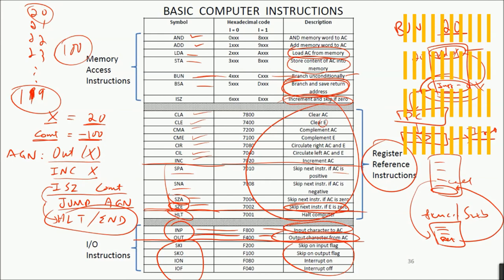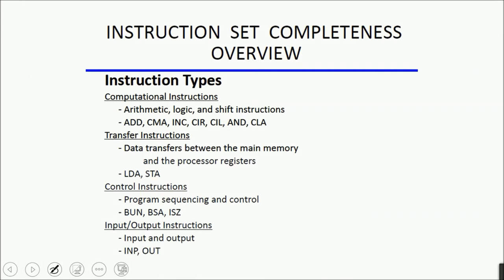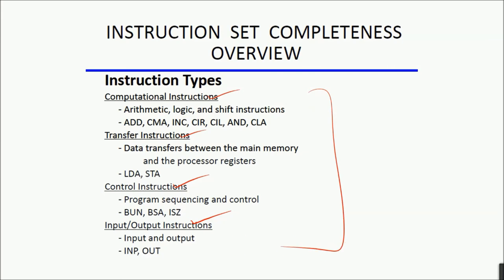This is our complete instruction set of 25 instructions for our basic computer. Hexadecimal codes of all instructions are provided. Our instruction set is now complete — we have computational instructions, data transfer instructions, program flow control instructions, and input/output instructions, all covered and discussed in this lecture. In the next lecture we are going to discuss the execution of instructions, timing and control, and the instruction cycle. See you in the next lecture, take care, stay safe, goodbye.